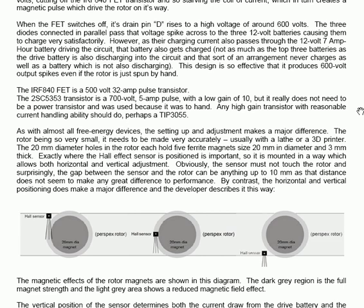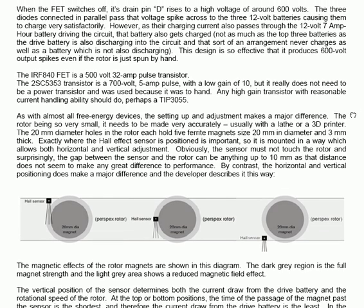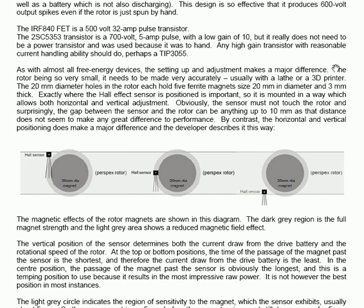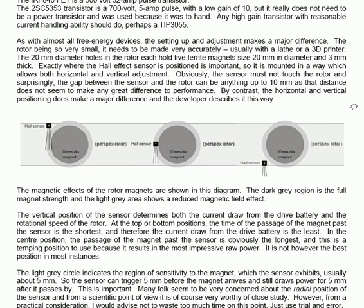This design is so effective that it produces 600 volt output spikes even if the rotor is just spun by hand. The IRF840 FET is a 500 volt 32 ampere pulse current transistor. The 2SC5353 transistor is a 700 volt 5 ampere pulse current control with a low gain of only 10. There doesn't need to be a power transistor and that was used because it was to hand. Any high gain transistor with reasonable current handling ability should do, perhaps a TIP3055.